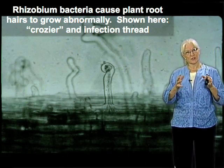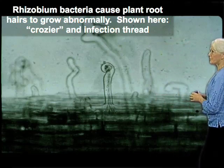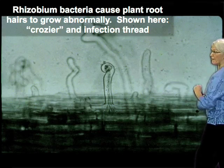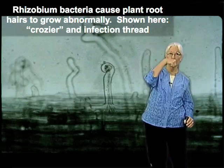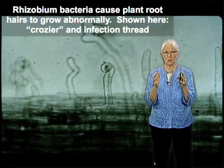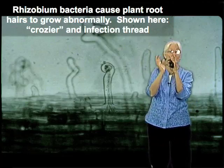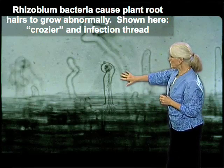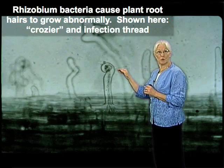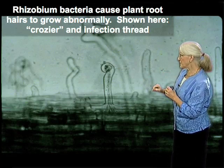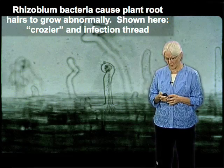One of the first changes that occurs when rhizobium meet a plant is that the root hairs, which are ordinarily straight, instead grow in a way that's deformed. Plant cells don't curve — think of a plant cell as a balloon inflated really hard inside a box. They can grow so that they form a curl, making what's called a shepherd's crook or crozier. In that, you can see a bacterial invasion called an infection thread, shown here as this highly refractile line going down through the root hair.